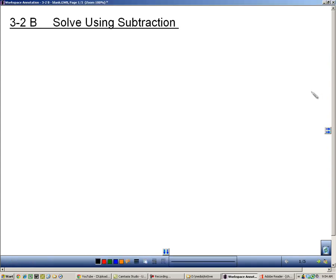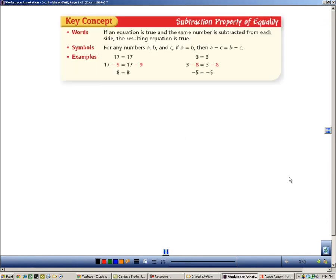Section 3.2b is about solving equations, this time using subtraction and not just addition. In this section we're going to use something called the subtraction property of equality, very similar to the addition property of equality. It simply says this: you can subtract a number from both sides of an equation and the equation stays true or stays equal.